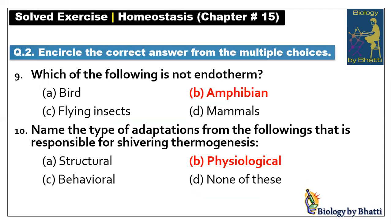MCQ number nine: which of the following is not an endotherm? Amphibians are ectotherms; birds and mammals are endotherms. Some students think it is flying insects, but flying insects produce endothermy — they heat their flying muscles very quickly and generate sufficient energy. So flying insects are typically endotherms, not ectotherms. MCQ number ten: the type of adaptation responsible for shivering thermogenesis — shivering is a physiological function, so the answer is B option, physiological.